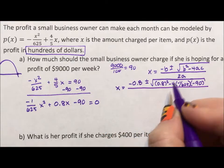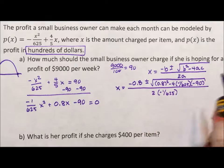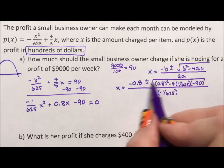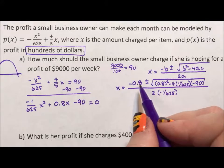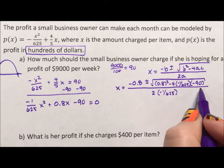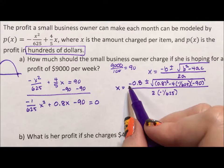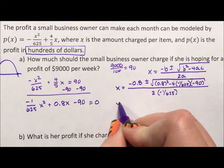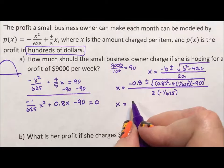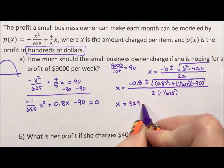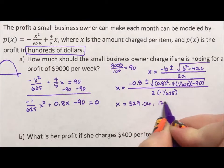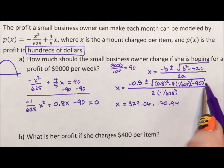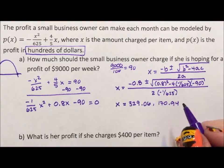All of that is over 2 times negative one over 625. This is one you should practice putting in your calculator — there's a lot going on. Make sure you do the addition and subtraction before you divide, and remember this gives two separate equations. The two answers I got are 329.06 and 170.94 — the order is reversed because of the negative. Pause the video and check you're getting these same two answers.